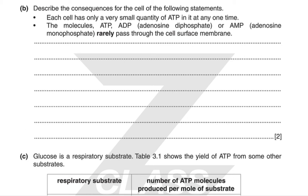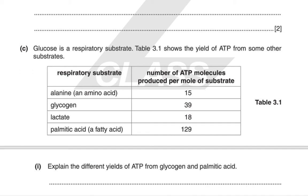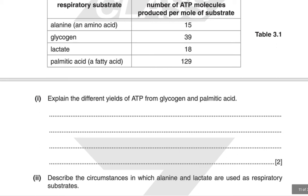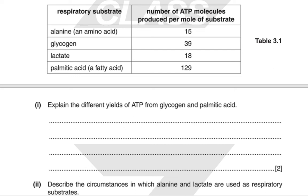Glucose is a respiratory substrate. Table 3.1 shows the yield of ATP from other substrates: alanine, glycogen, lactate and palmitic acid. Explain the different yields from glycogen and palmitic acid. Palmitic acid has a much higher yield because it is a long fatty acid chain with many more C-H bonds than alanine, which is a smaller amino acid per mole. Since hydrogens are needed for ATP production via oxidative phosphorylation, the yield of ATP is proportional to the number of C-H bonds. Therefore palmitic acid will have a much higher yield.